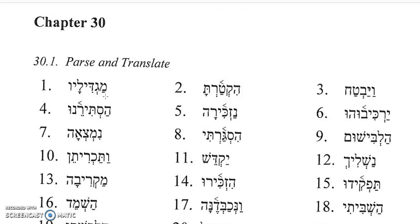You start out with the form Magdilav. You have a prefix Mem — the root looks like it's Gedal, to be great. The Hifial has a Mem with a Patah; that Patah was originally a Hay with a Patah, and the Mem would have had a Sheva. So that would be a Hifial participle. The av ending indicates that the participle is a masculine plural participle with a third masculine singular suffix, so it would mean the ones making or causing him to be great, or the ones magnifying him.